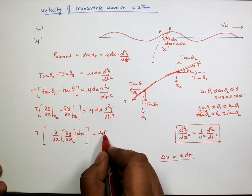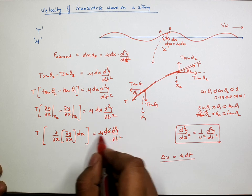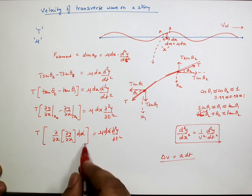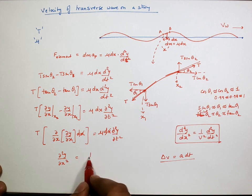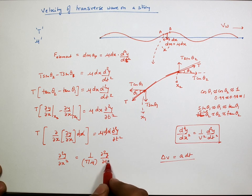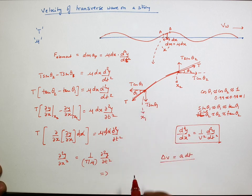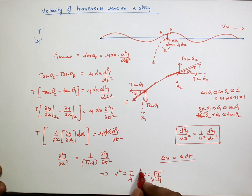This gives us T · ∂²y/∂x² · dx = μ dx · ∂²y/∂t². Cancelling dx, we get ∂²y/∂x² = (μ/T) · ∂²y/∂t², or equivalently ∂²y/∂x² = (1/(T/μ)) · ∂²y/∂t². Comparing with the general wave equation, the velocity of this disturbance is v = √(T/μ), which is the velocity of a disturbance passing in a rope under tension T having mass per unit length μ.